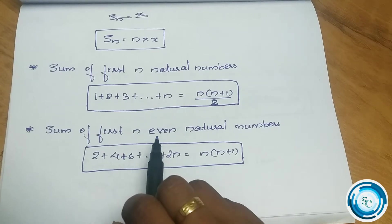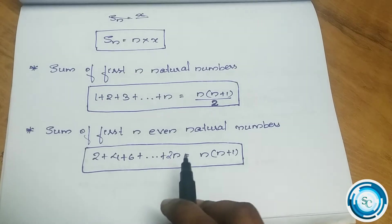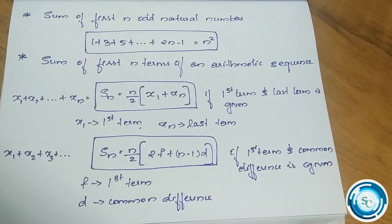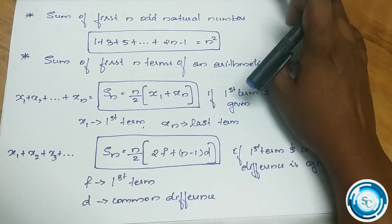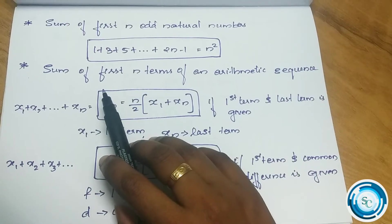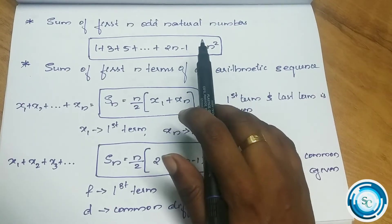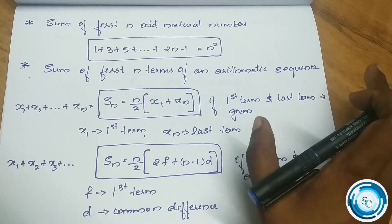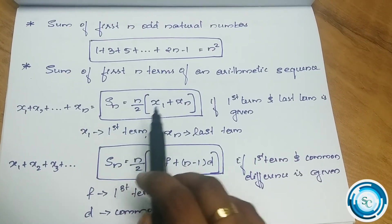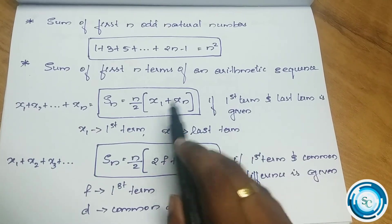The sum of the first n even natural numbers — 2, 4, 6 — is n into (n plus 1). The sum of the first n terms of an arithmetic sequence is Sn equals n by 2 into (x1 plus xn), where xn is the last term and x1 is the first term.